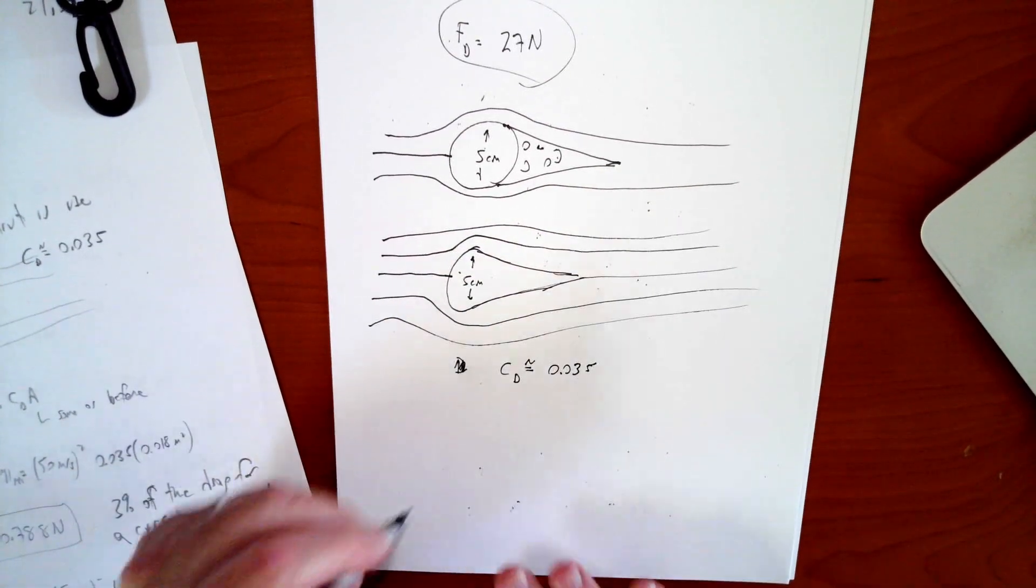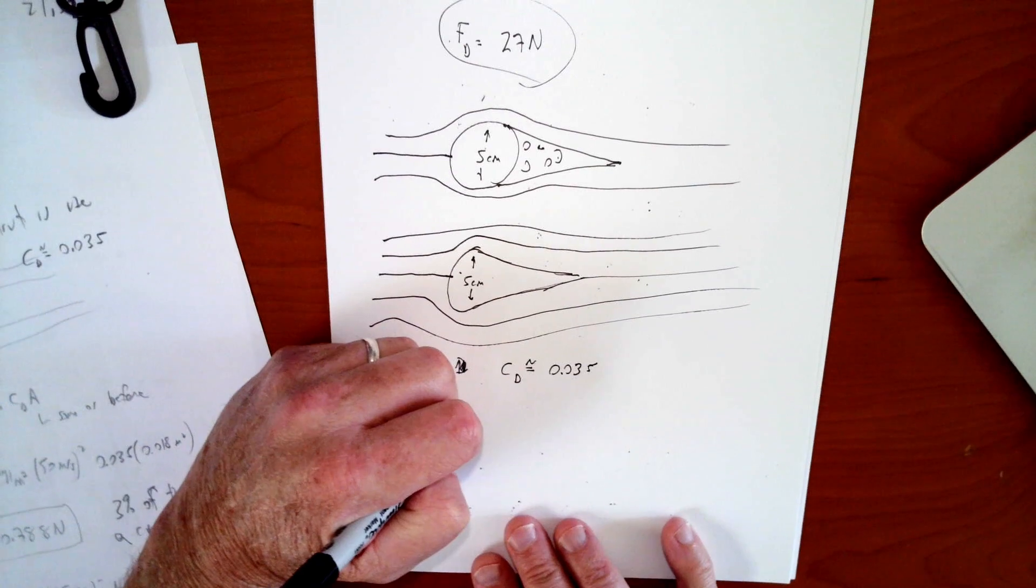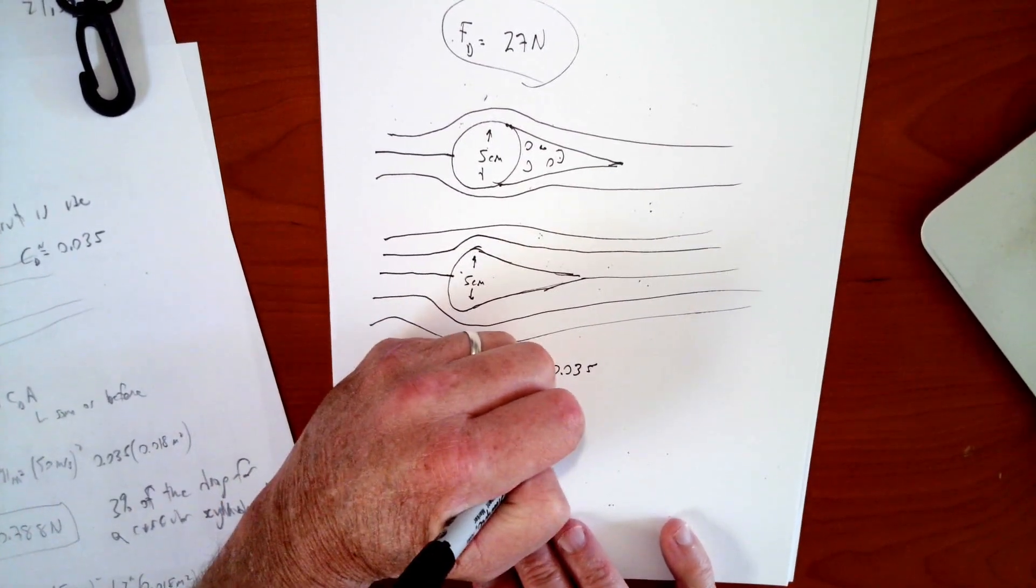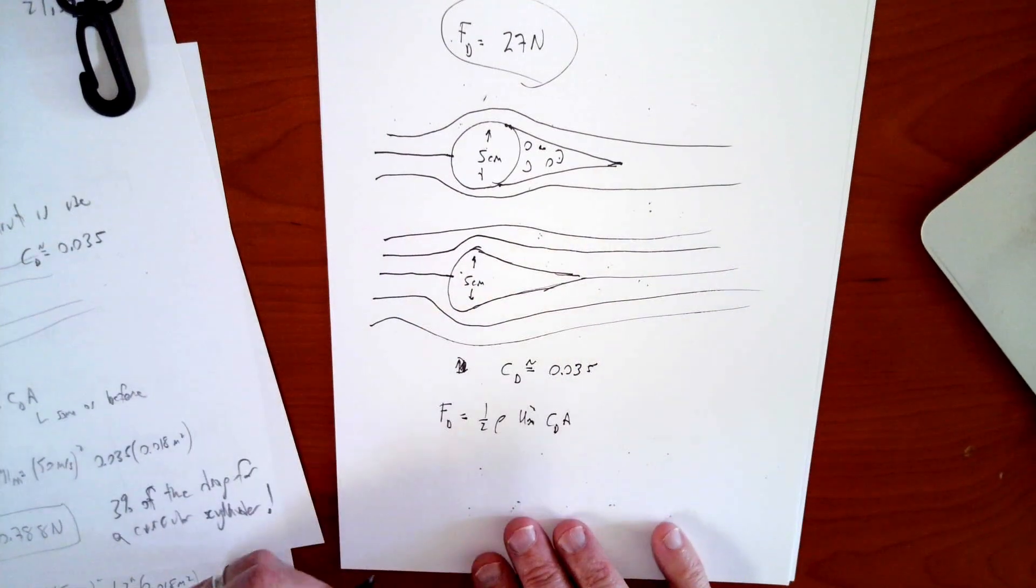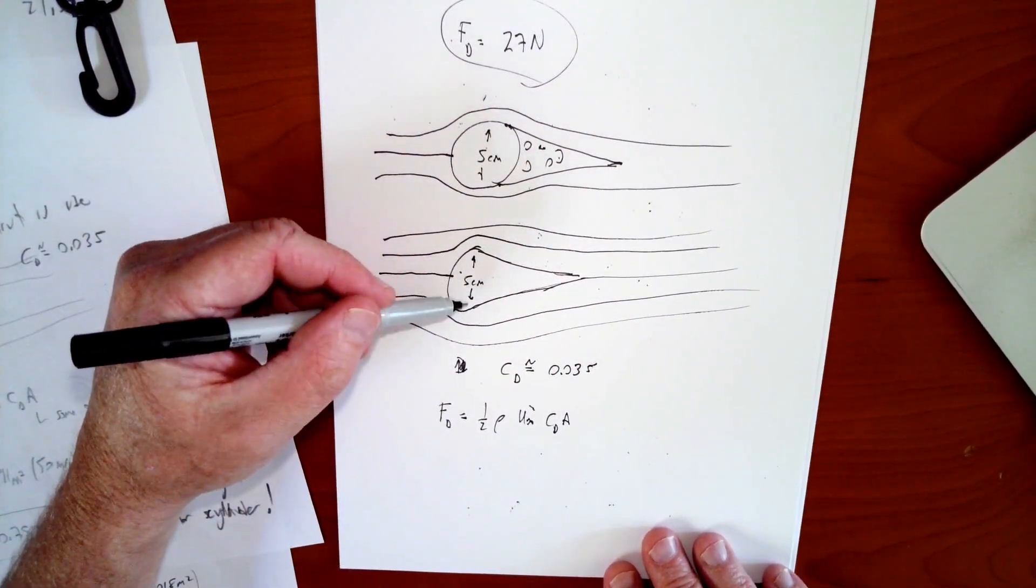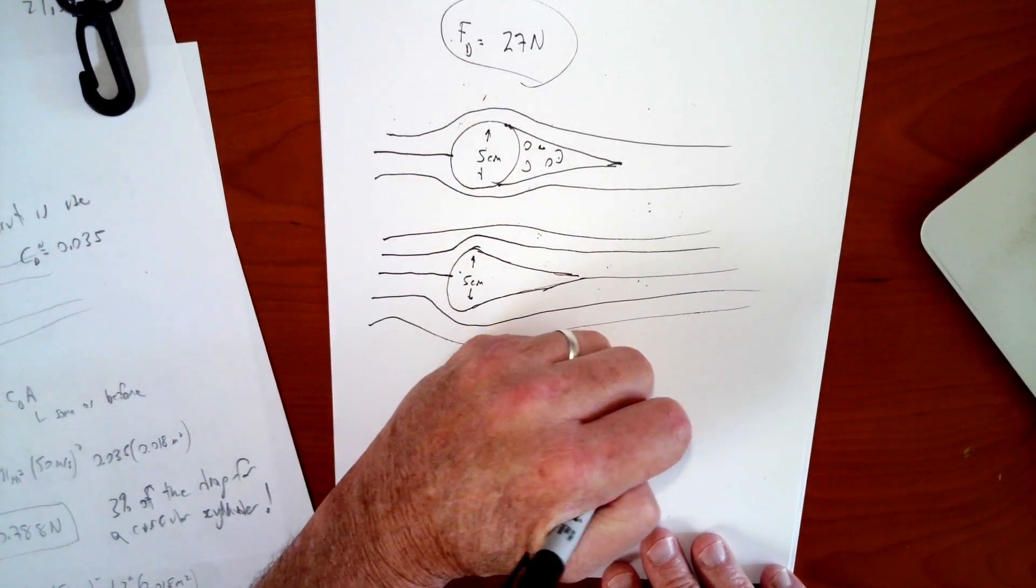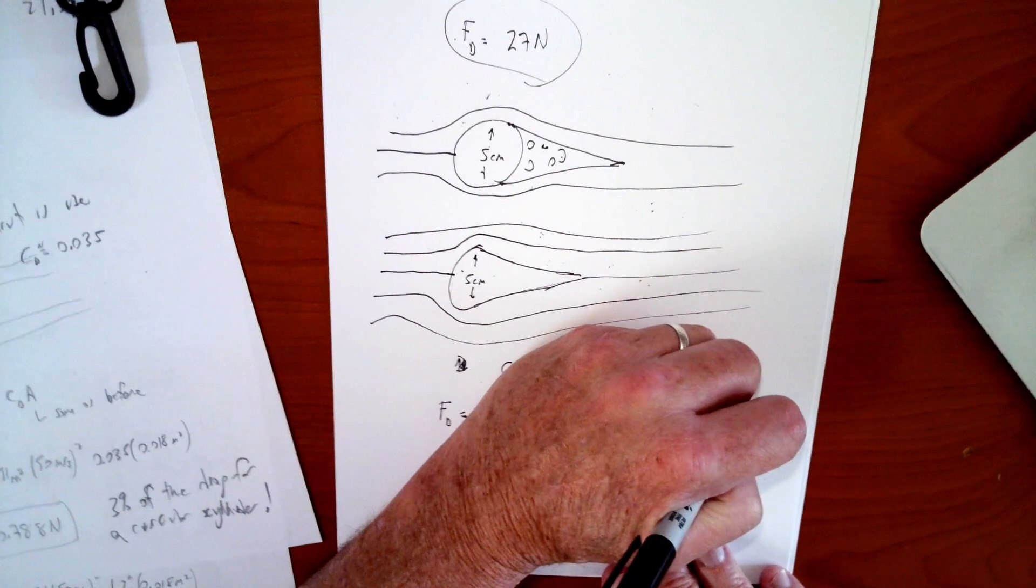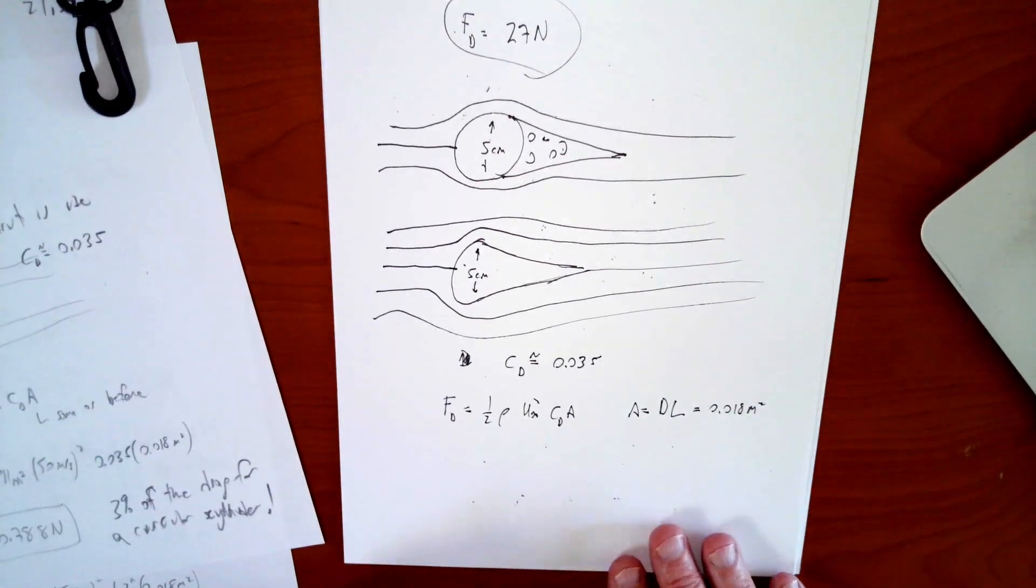So then I go ahead and use the same formula. I've got F of D, the drag force is equal to one half rho U infinity squared CD times A. And the A is the same as before, because it's still the frontal area, so it's just that diameter times L, A still equals just DL, which we said was equal to 0.018 meters squared. So that didn't change.